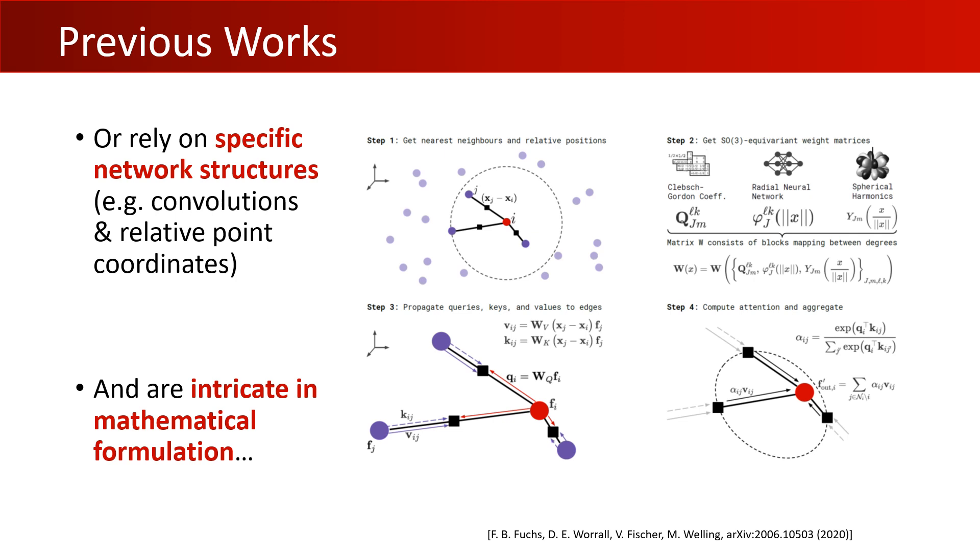They achieve equivariance using spherical harmonic bases and the SO3 group representation theory. However, both frameworks not only involve an intricate formulation, but are also restricted to convolutions and rely on relative positions of adjacent points, making them hard to incorporate into some existing pipelines.